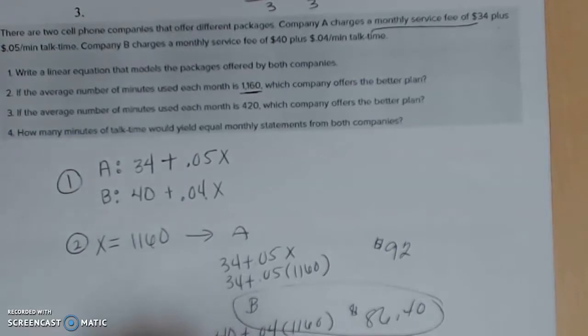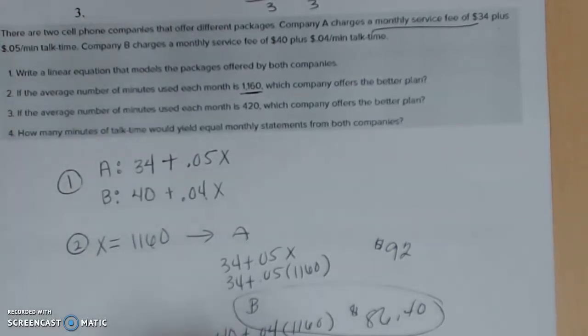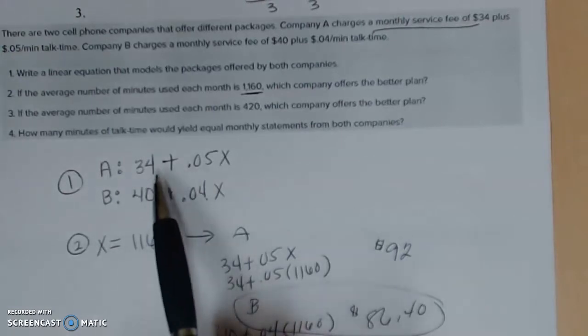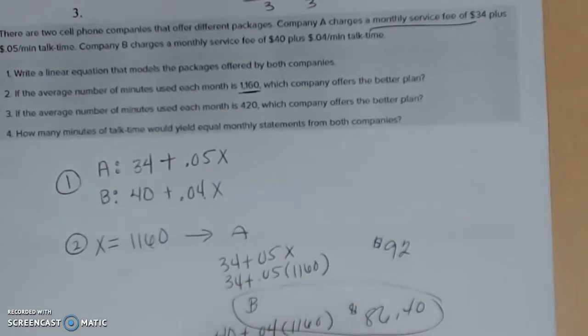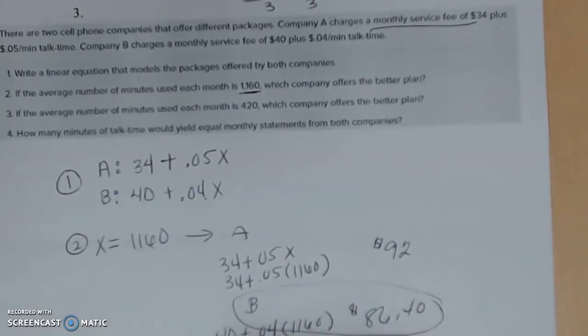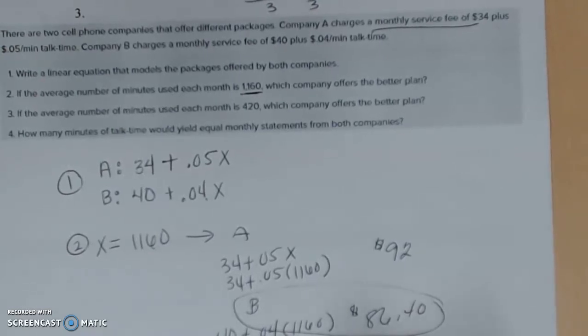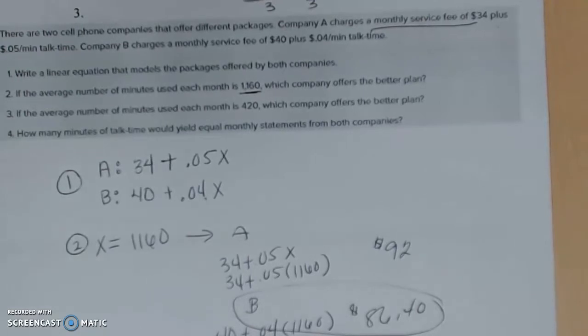Now it says part three. If the average number of minutes is 420, so we got someone who doesn't talk as much. So is it going to pay off for them to have a cheaper monthly fee and a higher per minute fee? Let's see. So again, I'm going to do A. So I do 34 plus 0.05 times 420. Again, I'm going to punch that in my scientific calculator and this tells me $55. Okay, let's try company B. So we're going to do 40 plus 0.04 times 420 and this gives me $56.80. So for the one with the less minutes, I'm going to save $1.80 if I went with company A.